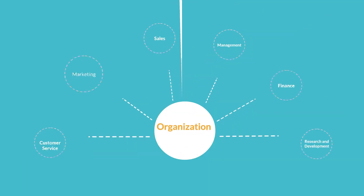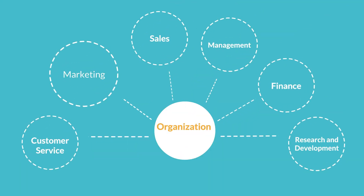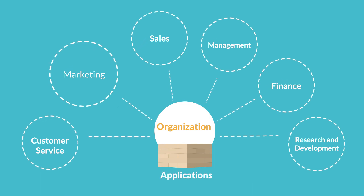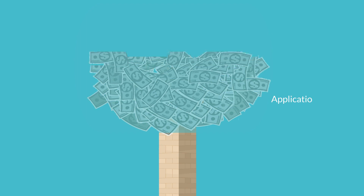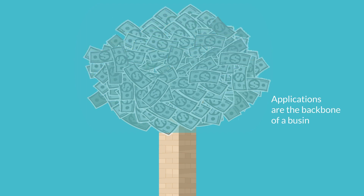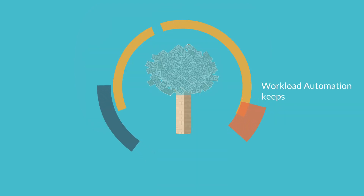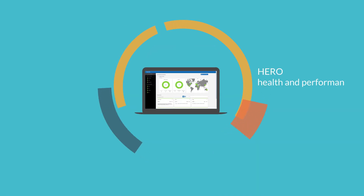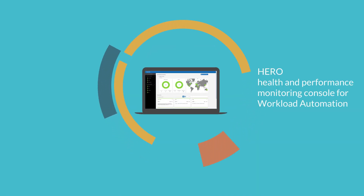To drive business return on investment and retain competitive advantage, organizations rely on their applications. Applications are the backbone of a business, and workload automation keeps it running smoothly and efficiently. Hero is a health and performance monitoring console for workload automation.